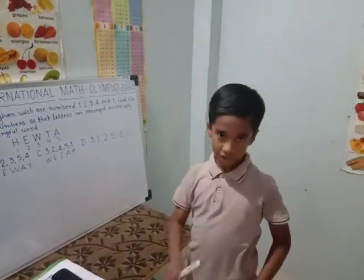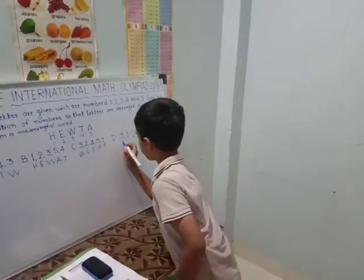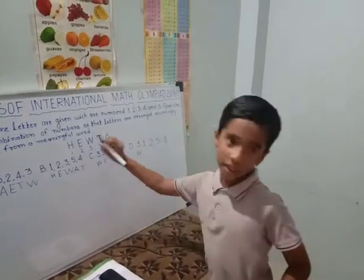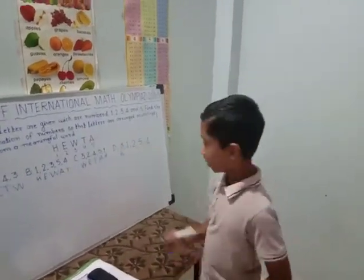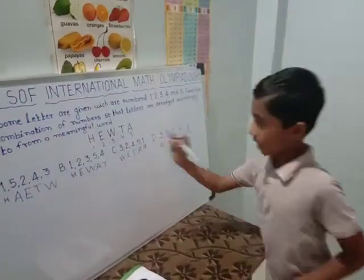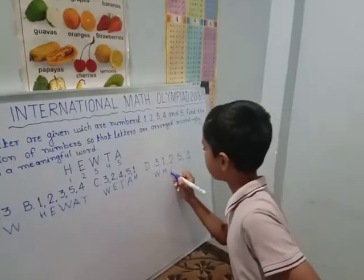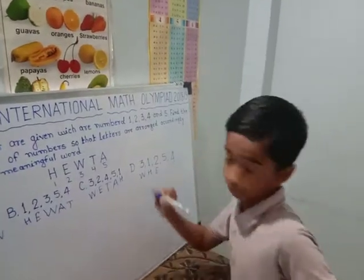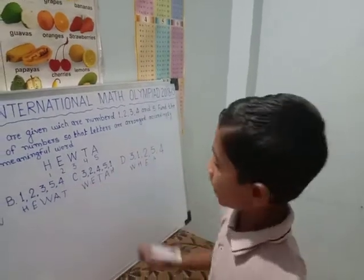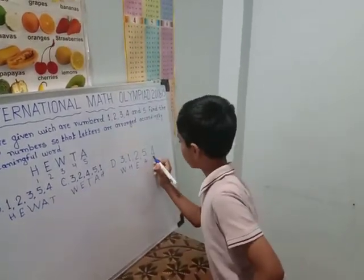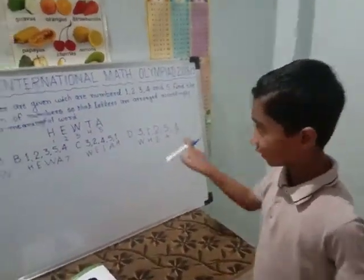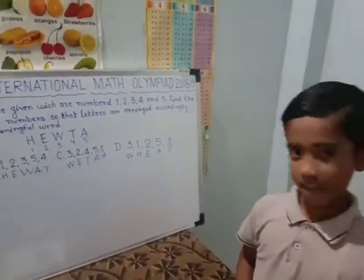Now option D1: third is W, first is H, second is E, fifth is A, fourth is T. It became a meaningful word — yes! Wheat. We are making the word WHEAT. Is it clear?